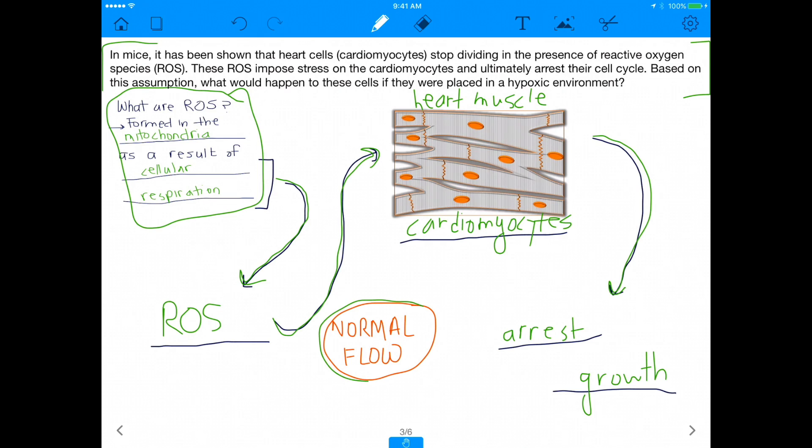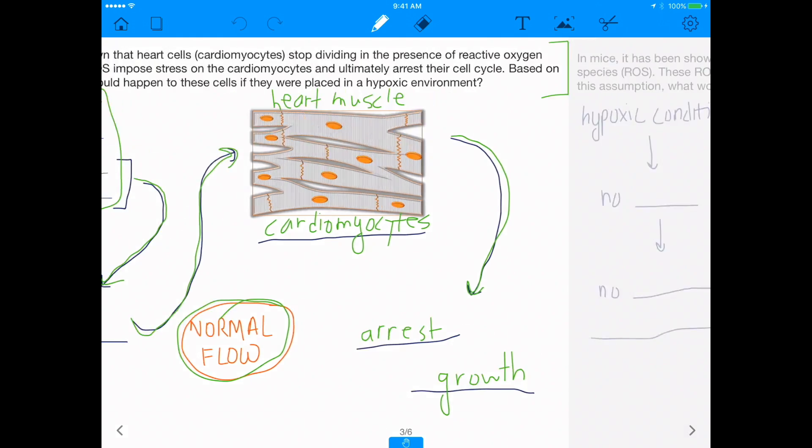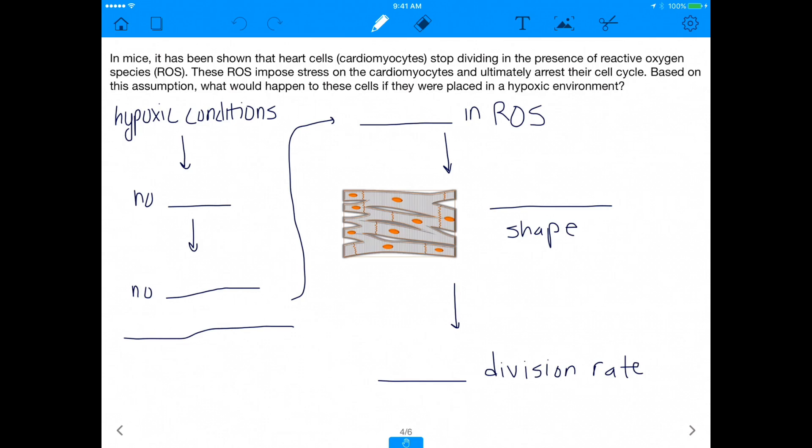So they won't grow anymore because there's so much reactive oxygen species. This is the normal flow. What do I mean by normal flow? This is what's normally happening because usually we're always cellular respirating, and the cellular respiration creates reactive oxygen species, which then go to cardiomyocytes and arrest their growth. But now, let's say we're put in a hypoxic condition because that's what this question is saying.